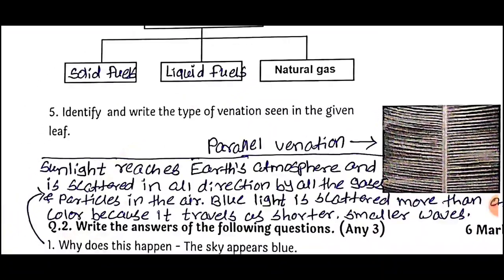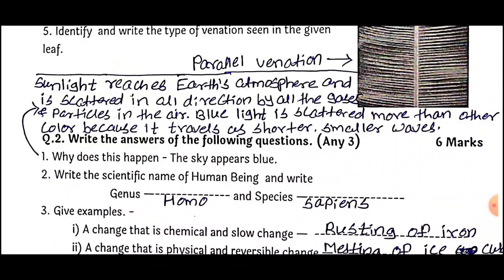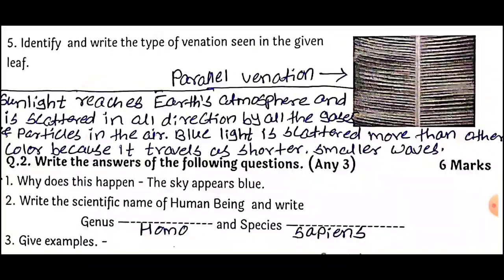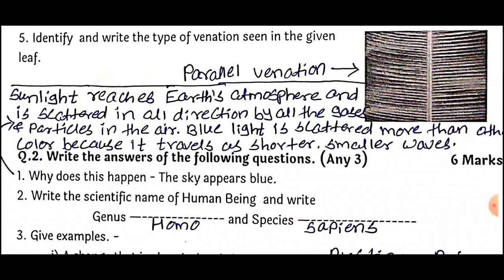We are going to continue with Question Number 2: Write the answers of the following questions — any 3 answers for 6 marks. First question: Why does this happen? The sky appears blue. Answer: Sunlight reaches Earth's atmosphere and is scattered in all directions by all the gases and particles in the air. Blue light is scattered more than other colors because it travels as short, smaller waves. Therefore, the sky appears blue.